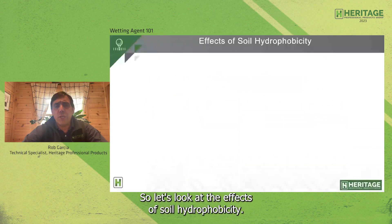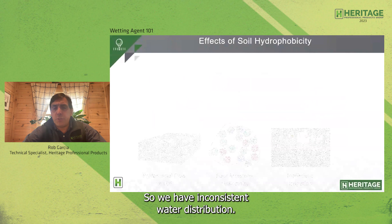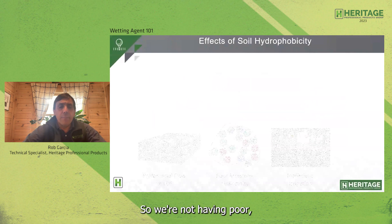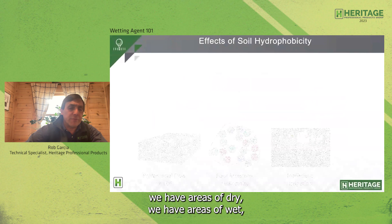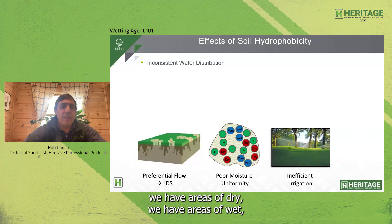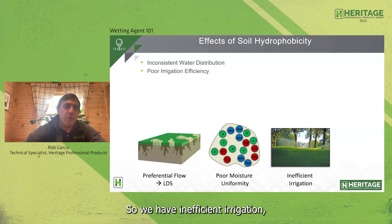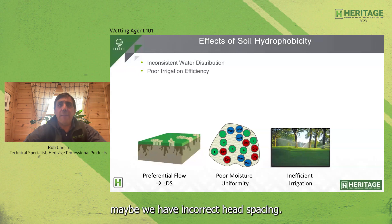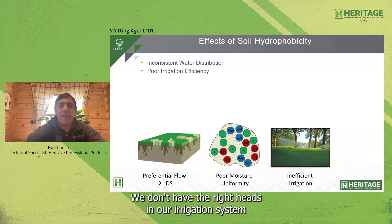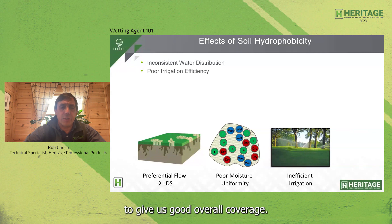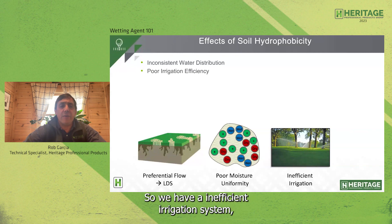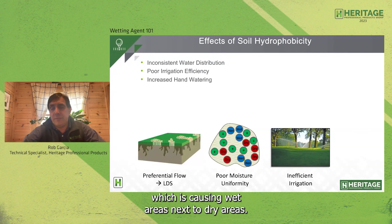Looking at the effects of soil hydrophobicity: we have inconsistent water distribution and poor moisture uniformity — areas of dry and areas of wet that are inconsistent throughout the soil profile. This can come from poor irrigation efficiency, maybe incorrect head spacing or heads that don't give good overall coverage, which causes wet areas next to dry areas.